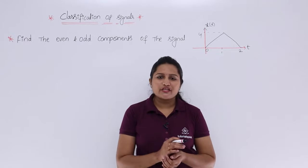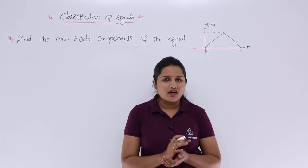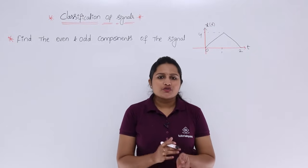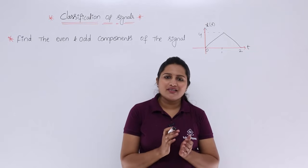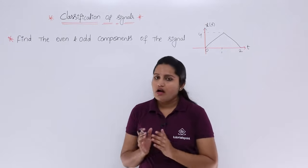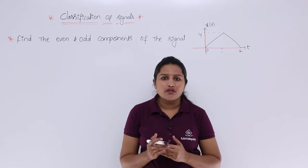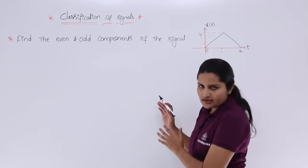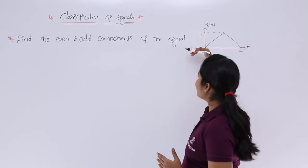In this video, we are going to solve a problem related to even and odd signals, which comes under classification of signals. Under classification of signals, we discussed even and odd signals and even and odd components. Here, on that even and odd component, we are going to solve a problem. This is also a GATE model problem, so you can solve it like this. Find the even and odd components of the signal given.